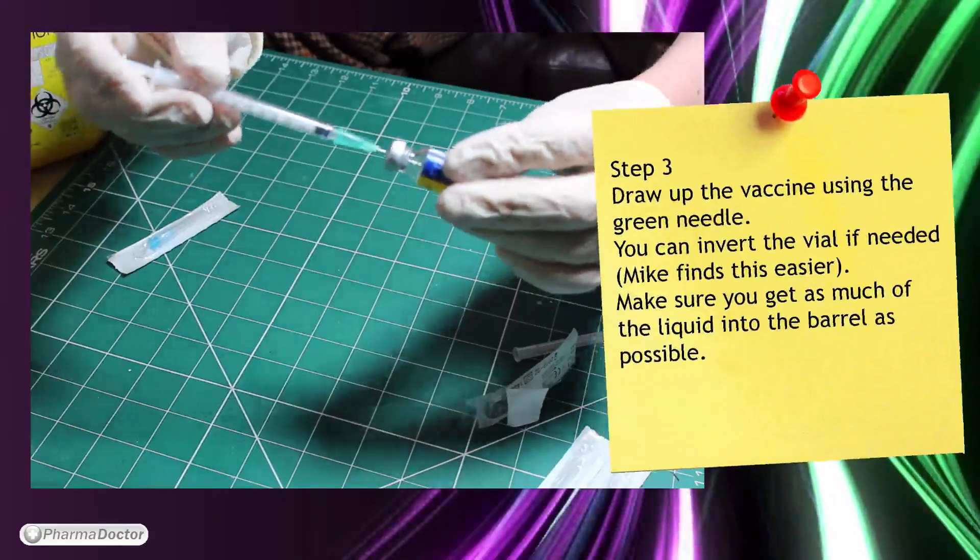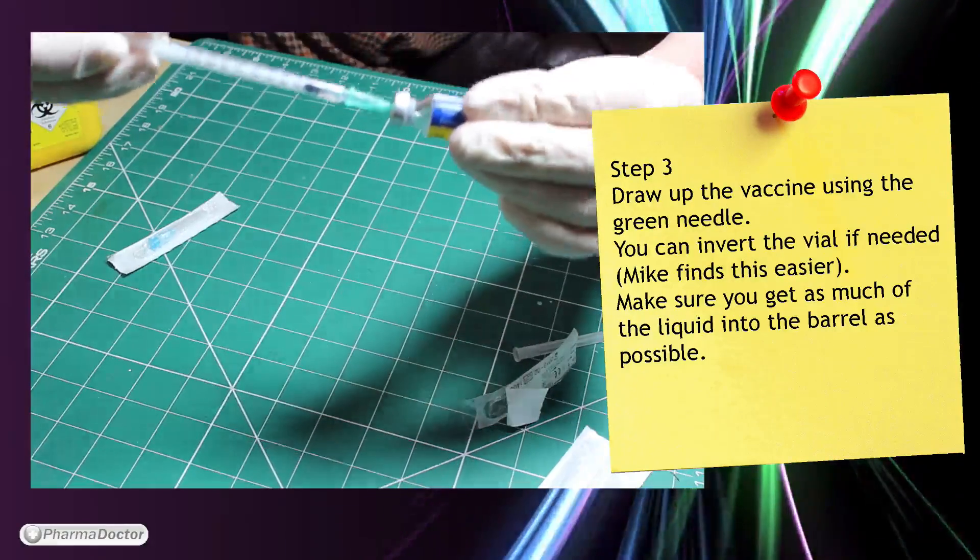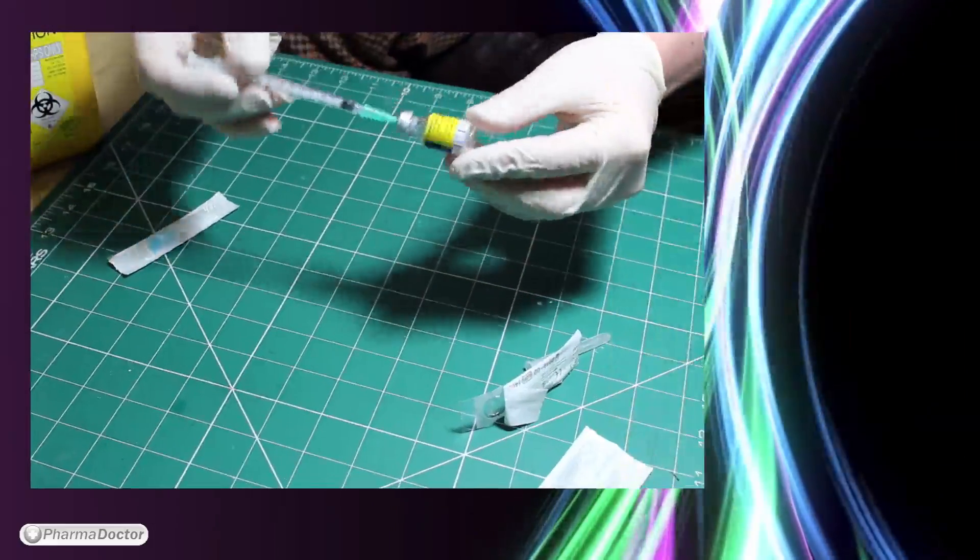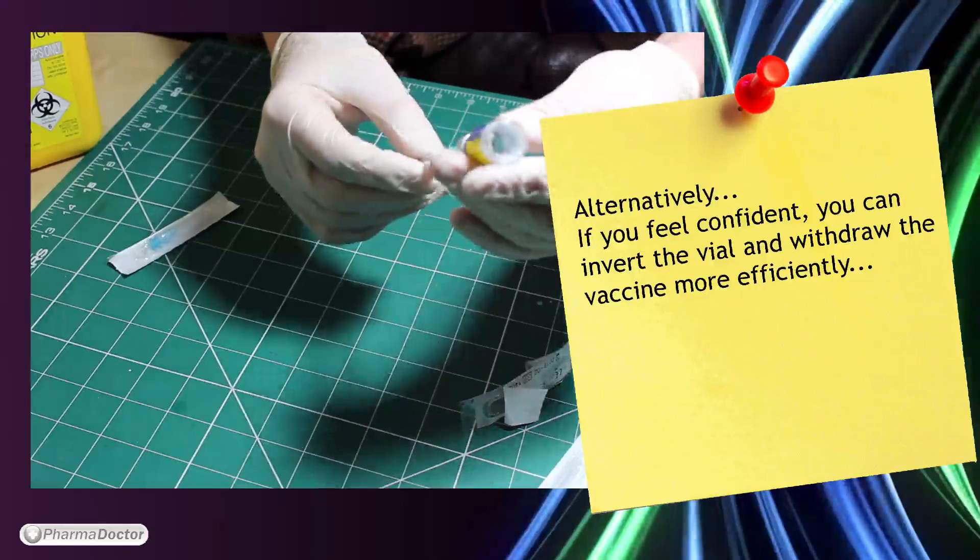Step 3. Draw up the vaccine using the green needle. You can invert the vial if needed. I find this easier. Make sure you get as much of the liquid into the barrel as possible. This is just a quick demonstration of the inversion technique.